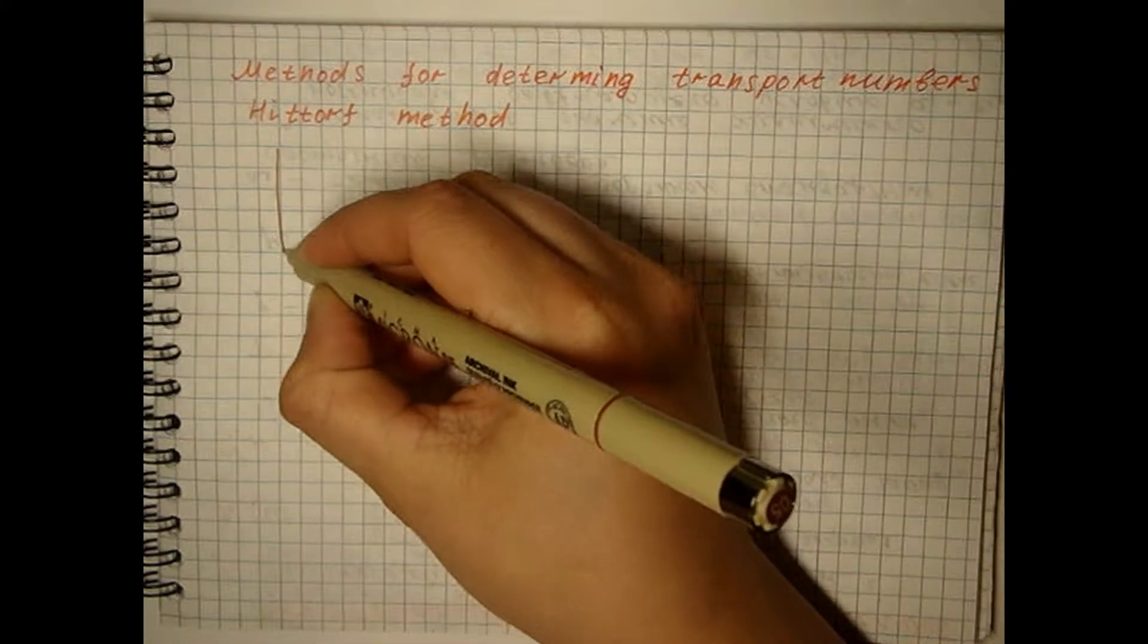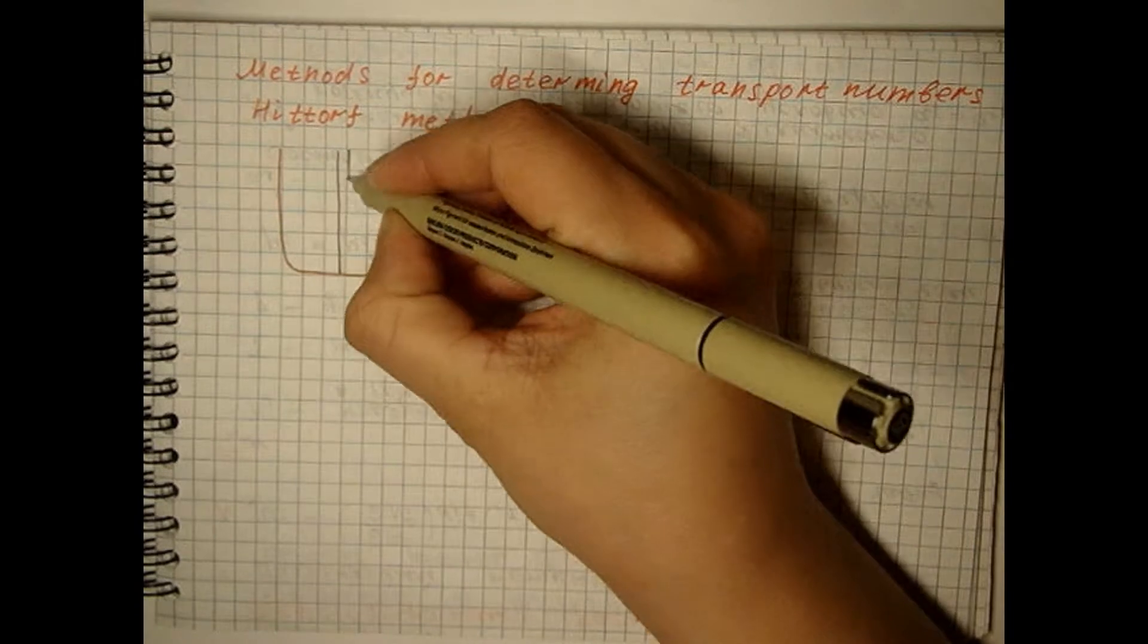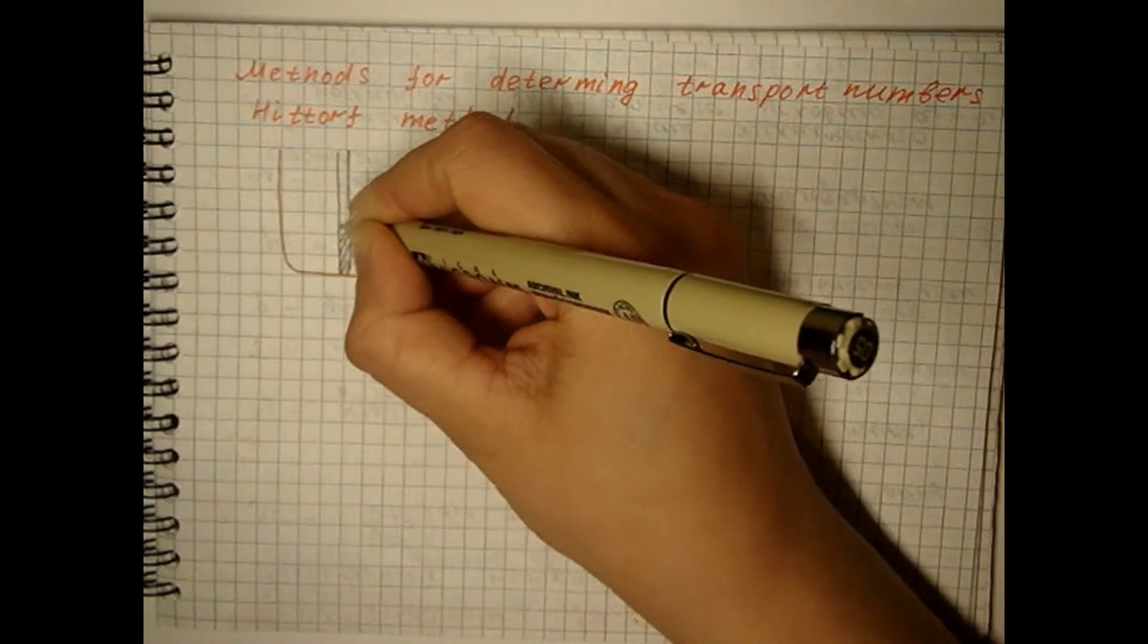Suppose a direct current passes through an electrochemical cell. This cell is divided into three compartments by porous walls.